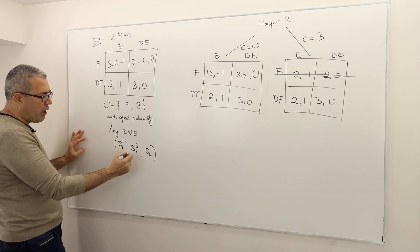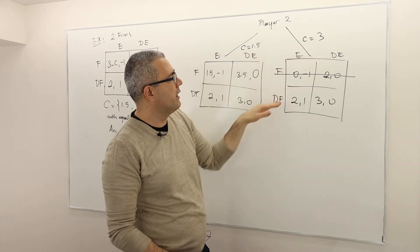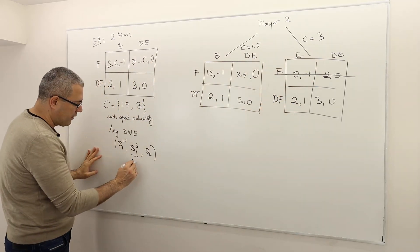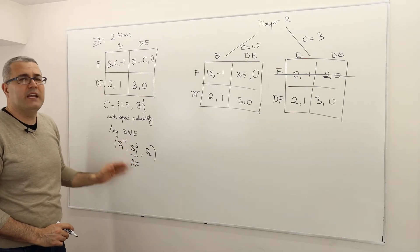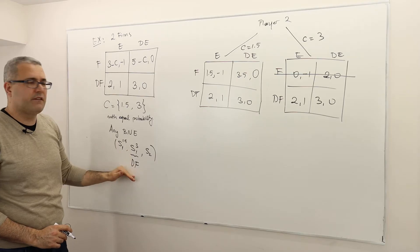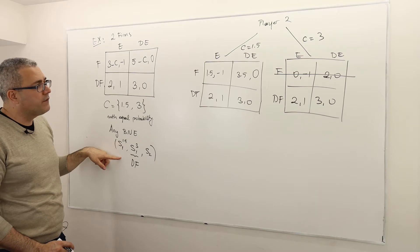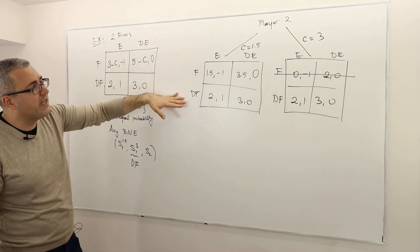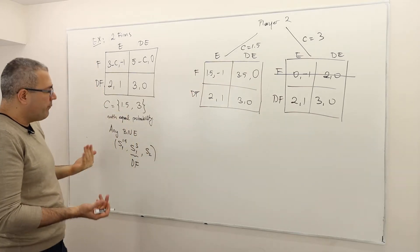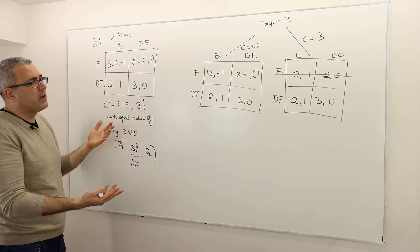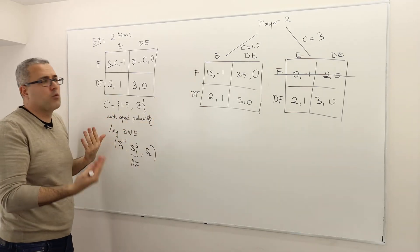We already know that in the scenario where C is equal to 3, player 1 is going to play don't fight. So we can fix this. In any Bayesian-Nash equilibrium, player 1 is going to play DF when C equals 3. However, when C equals 1.5, what player 1 would like to play depends on what player 2 is going to play.